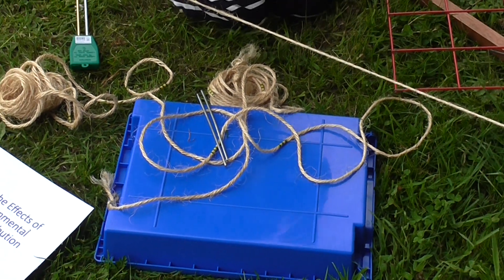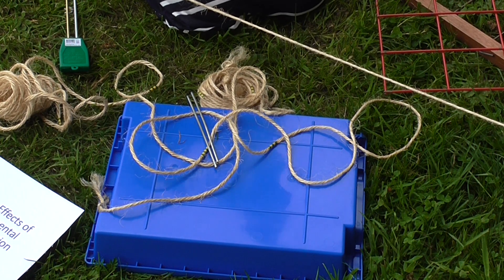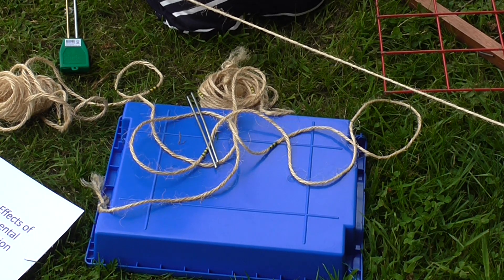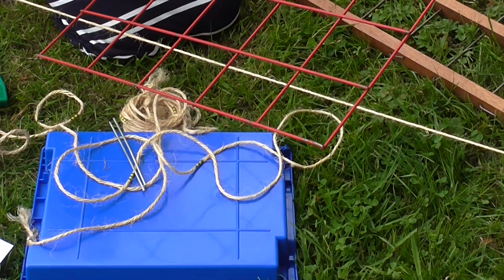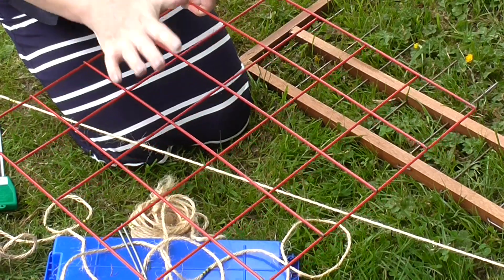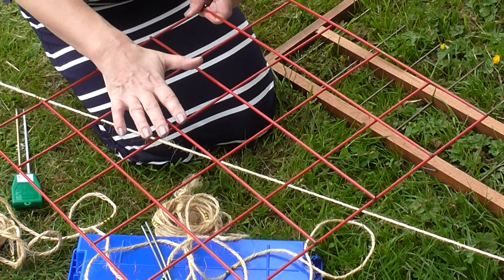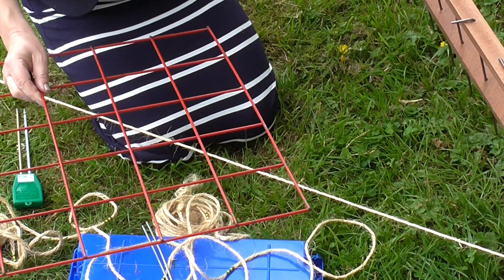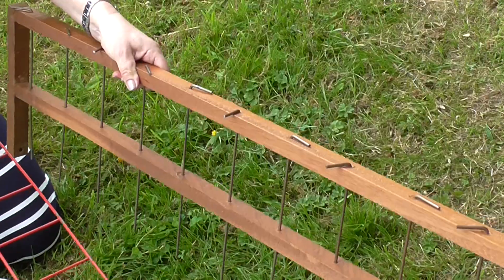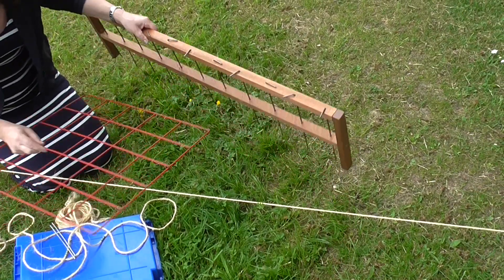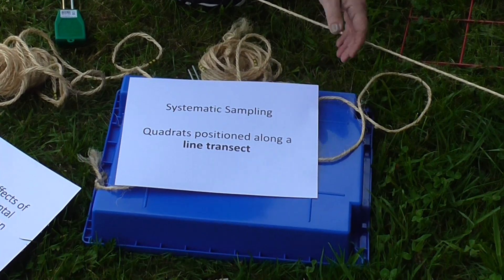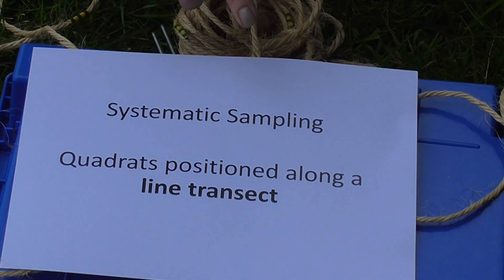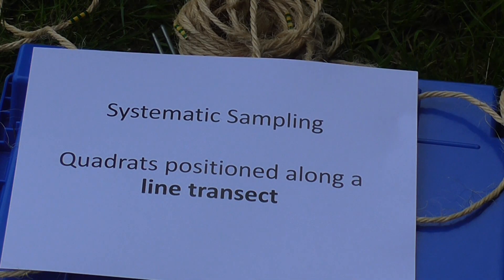Today I've laid out a 20-metre transect, but obviously it can vary in length depending on what you're investigating. I'm under quite a large tree, so I chose a slightly longer one. You'll need some way of actually measuring the abundance of the clover plants at different positions along the transect. The line transect is an example of what's known as systematic sampling — we are going to position quadrats along a line transect at regular intervals. So it's not random; the transect tells us where to put the quadrats. It's systematic.